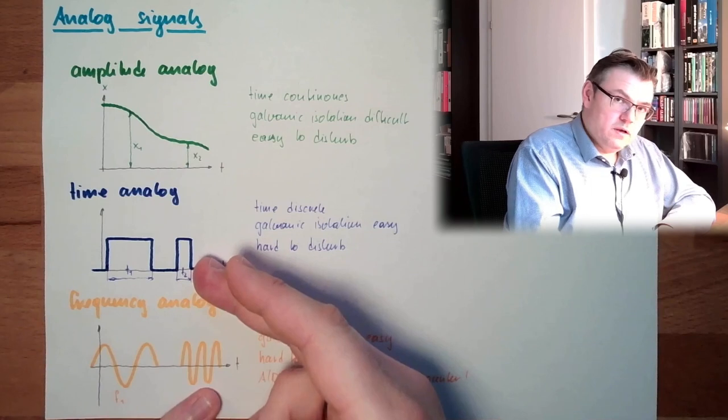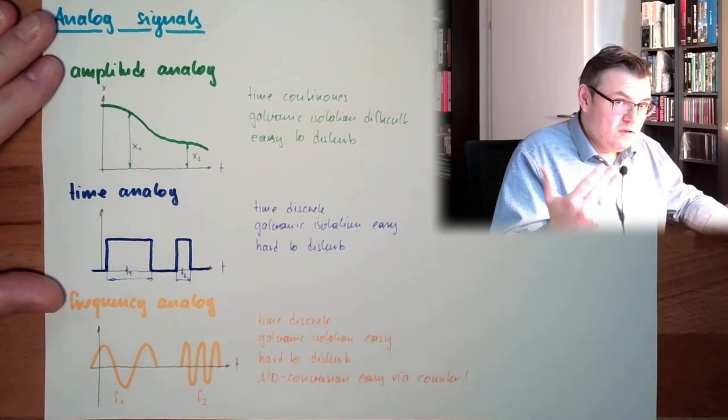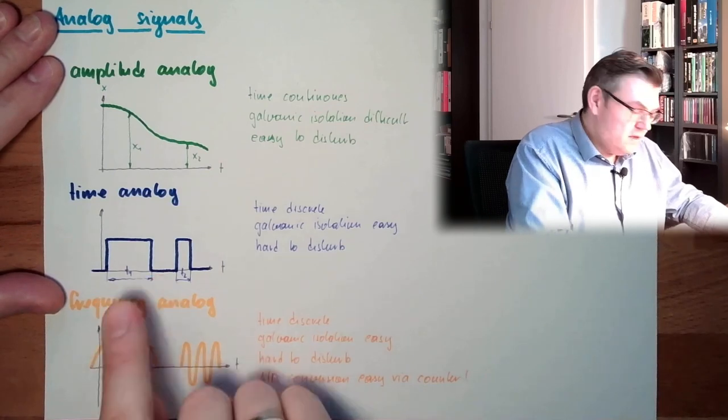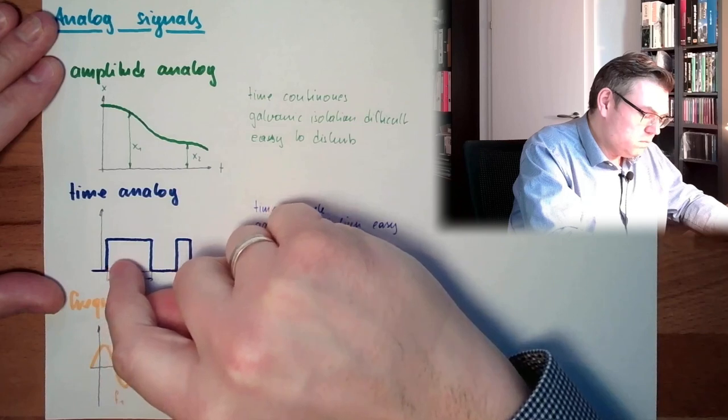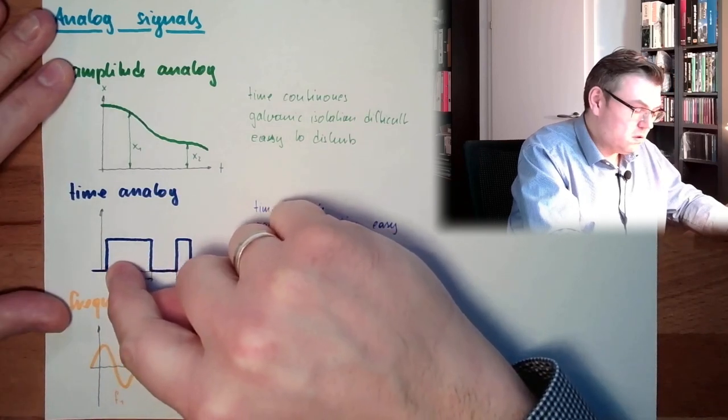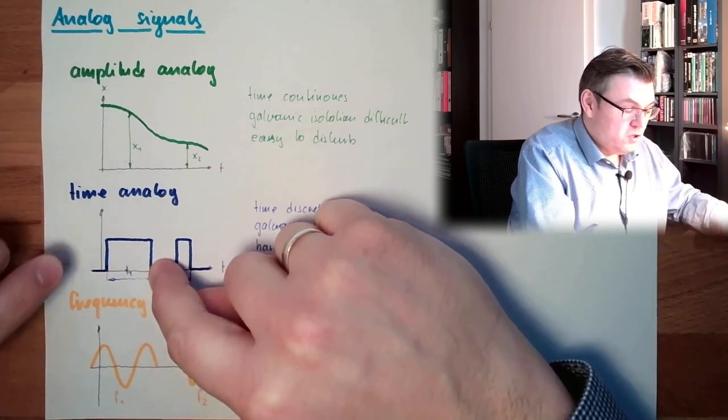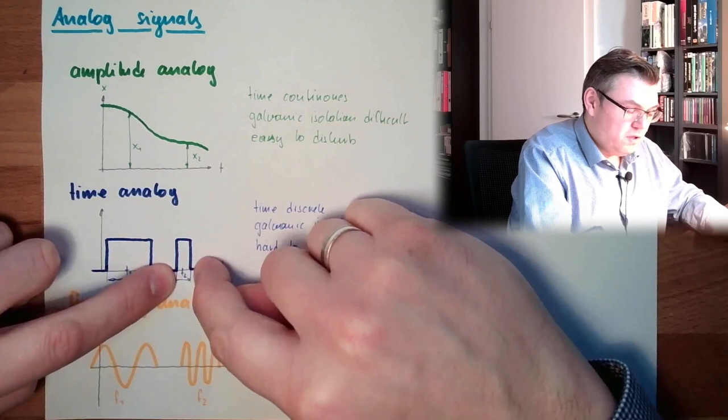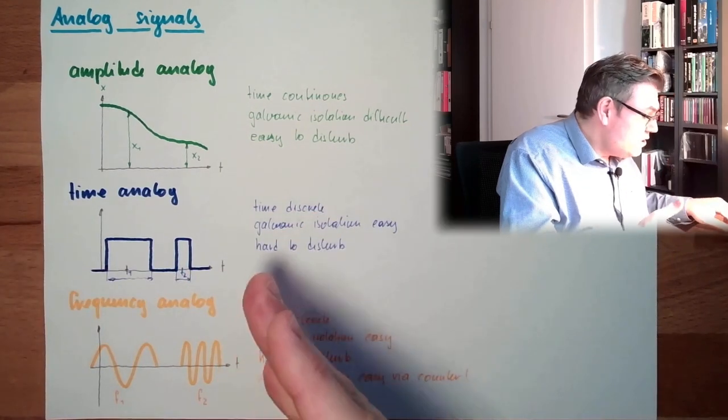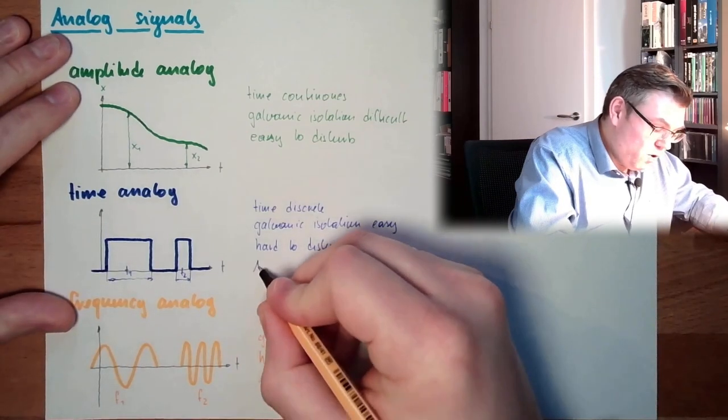How might this work here? I also take a counter, I measure a certain frequency. As long as the time is here. So I start here counting, with a constant frequency, I'm counting up, and then here I stop. If I've counted far, the time was long. If I'm counted not that far, the time was short. So also, the analog digital conversion here is also easy. And via counter, no problem.